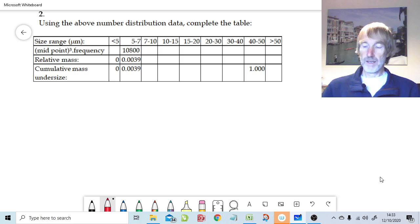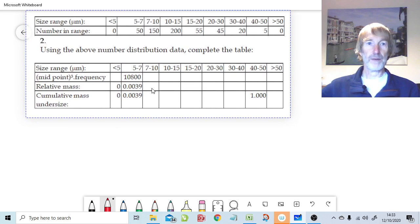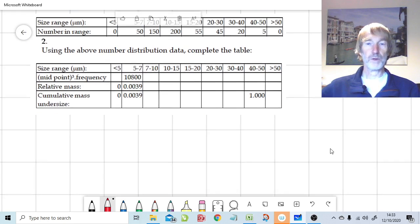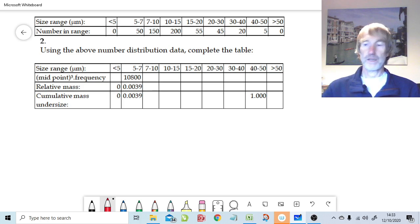The question refers to the above number distribution data, so we're referring back to Question 1. Let me just bring the data back from Question 1. This was the data that we had: it was broken into size ranges. Here we have 5 to 7 microns with 50 particles, 7 to 10 microns, up to 40 to 50 microns where there's 5 particles. There was nothing above 50 microns, nothing below 5 microns. So we're just in that size range between 5 and 50 microns broken up into these size grades or ranges.